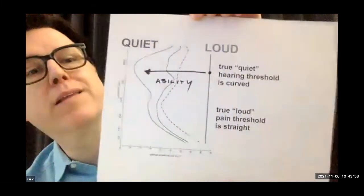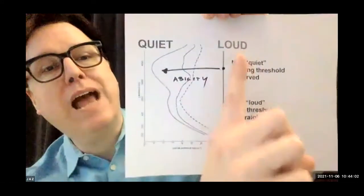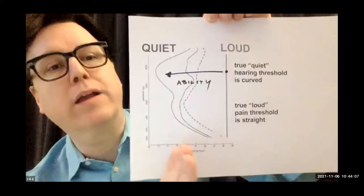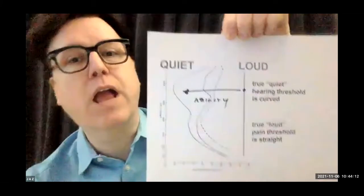Jay argues that audiograms starting in the 1960s became less accurate by distorting the truth: the natural curve of quiet was straightened, turning the natural straight line of loud into a curve. The numbers use 'hearing level' decibels instead of sound pressure decibels, making them incompatible with hearing device specifications or CDC noise protection guidelines. Jay concludes: the only apparent purpose of turning that curve into a straight line was to define people as losers.